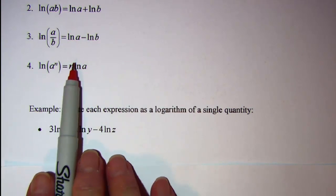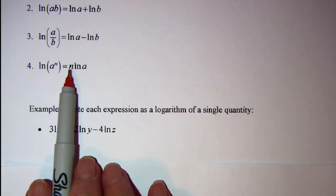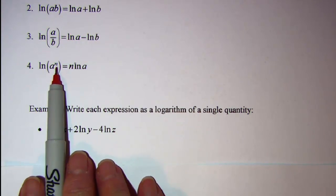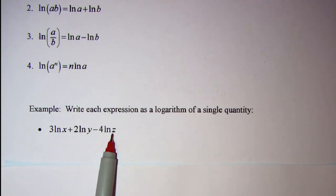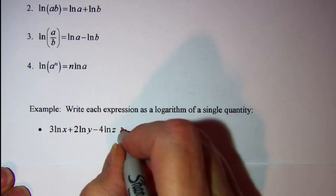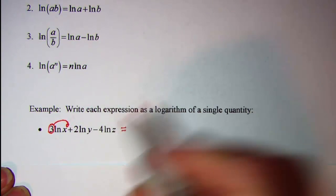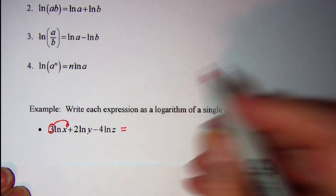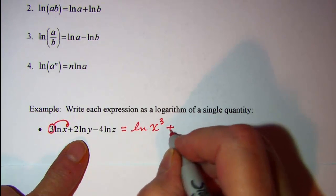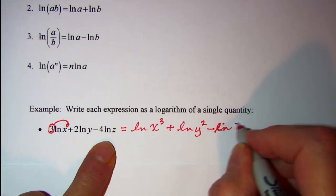Now we can see from this fourth property, when we have a number multiplied by a natural logarithm of some argument, that coefficient, that number that's out in front, can be written as the exponent on the argument. So we have 3 terms here, and each of those terms have a number out in front of the logarithm. So I'm going to use that fourth property to bring this number up as an exponent here on the x. Bring the 2 up on the y and the 4lnz. So we have lnx to the 3rd power plus lny to the 2nd power minus lnz to the 4th power.